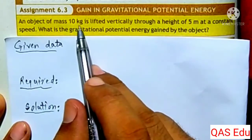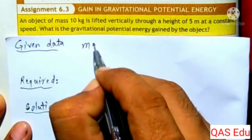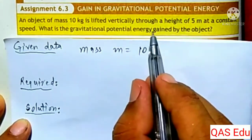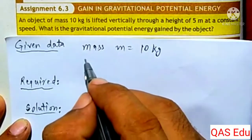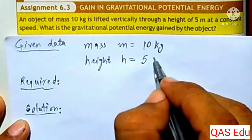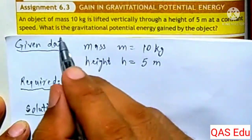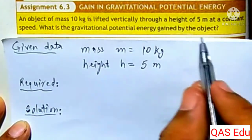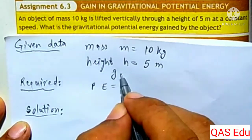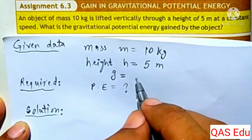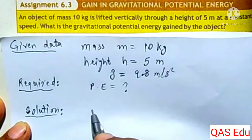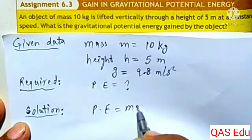An object of mass 10 kg moves upward by 5 meters. What is the gravitational potential energy gained? Gravitational acceleration is 9.8 meters per second squared. The formula is Potential Energy equals M·g·H.